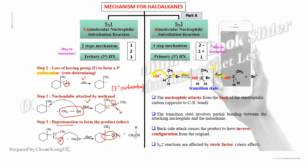The proton is removed in the deprotonation step, regenerating CH3OH. This is also a fast step. So for weak nucleophiles in SN1, there are two fast steps. For strong nucleophiles, there is only one fast step — direct nucleophilic attack. Always remember: tertiary for SN1, primary for SN2 in normal cases.